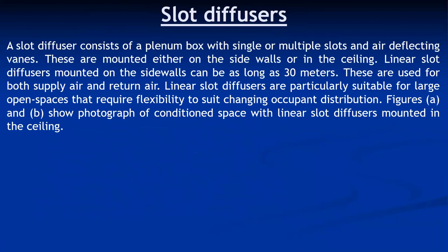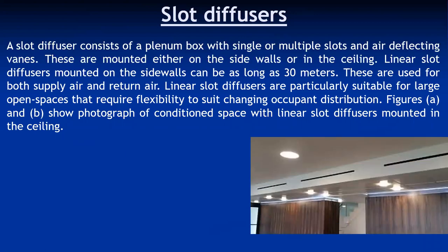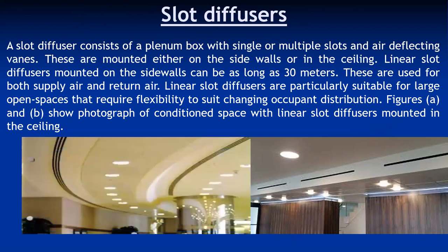The third type is slot diffusers. A slot diffuser consists of a plenum box with single or multiple slots and air-deflecting vanes, mounted either on the side walls or in the ceiling. Linear slot diffusers mounted on the side wall can be as long as 30 meters, and are used for both supply and return air. They are particularly suitable for large open spaces that require flexibility to suit changing occupant distribution, and are commonly used in offices, passages, and lobbies.